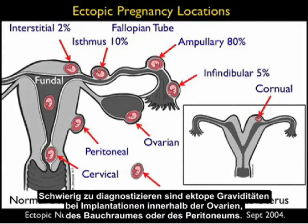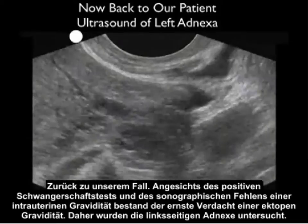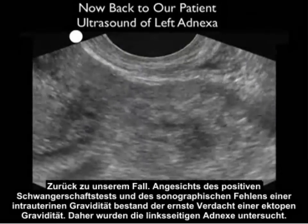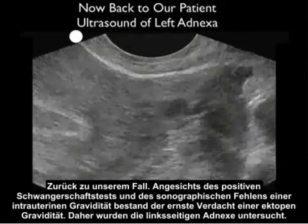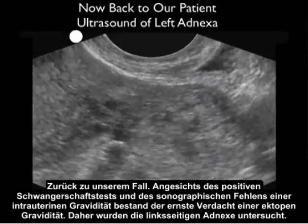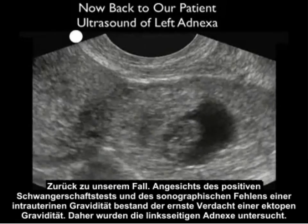Tough ectopics to diagnose are those that implant within the ovary, within the abdominal cavity, or within the peritoneal lining. These can be very hard to diagnose and commonly grow to an advanced stage before diagnosis. Returning to our case, given the presence of a positive pregnancy test and the absence of an IUP on bedside ultrasound, we were very concerned about ectopic pregnancy and decided to scan out to the left adnexa.